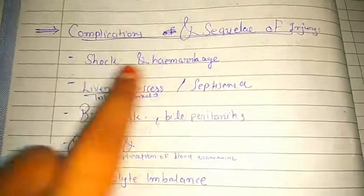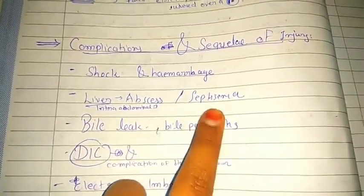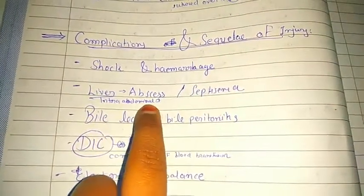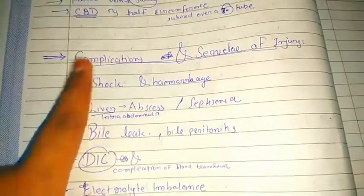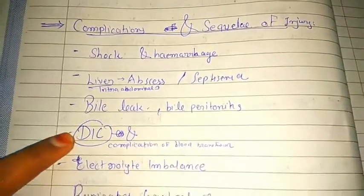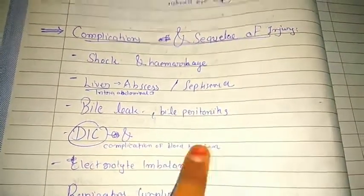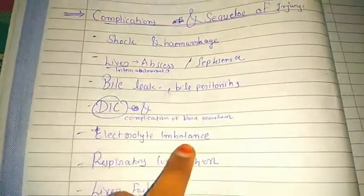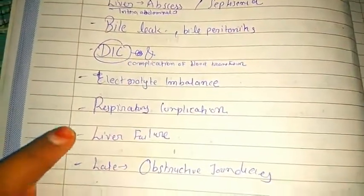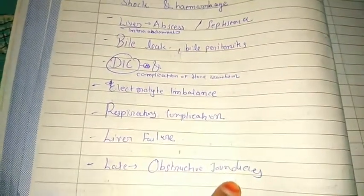Complications of liver injury include shock and hemorrhage, liver abscess or septicemia, intra-abdominal and subphrenic abscess, bile leak and bile peritonitis, disseminated intravascular coagulation (DIC), complications of blood transfusion, electrolyte imbalance, and respiratory complications.